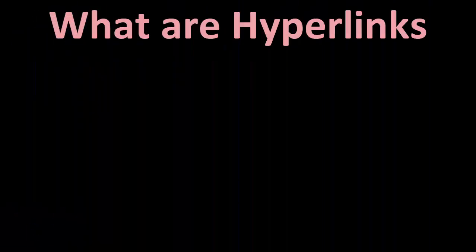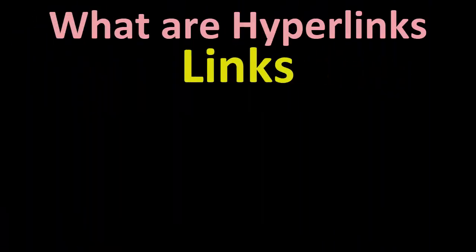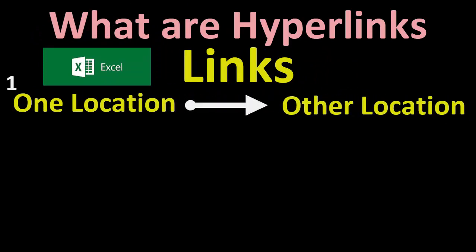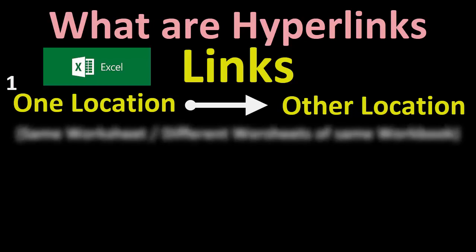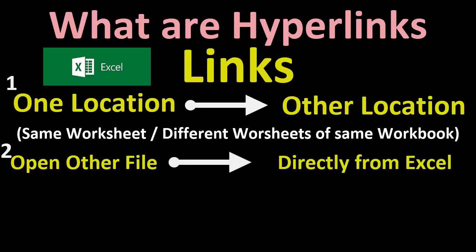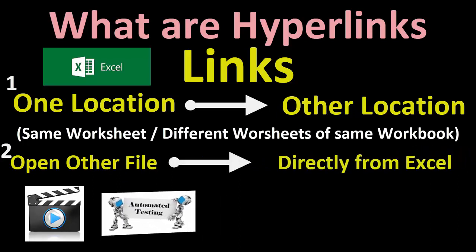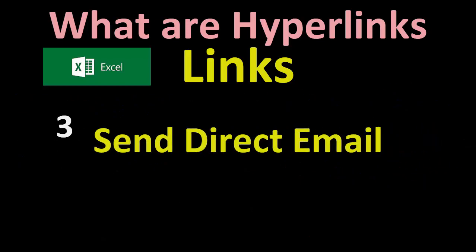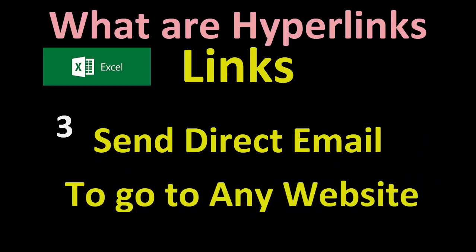So what are hyperlinks? Hyperlinks are links that we use in Excel to directly move from one location to another — to another cell within the same worksheet, within the same workbook but different worksheets, or to open another file directly from Excel. That other file may be any video, picture, PDF file, or even another Excel file. These hyperlinks are also sometimes used to directly send an email to a specified email ID or to go to any website directly from an Excel file.